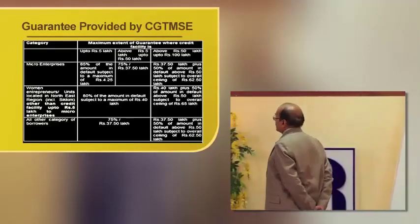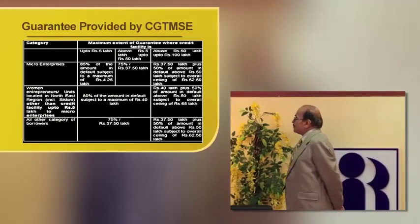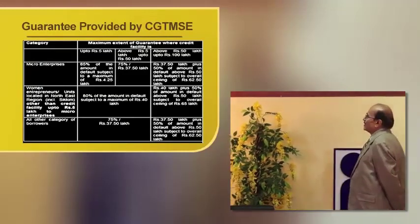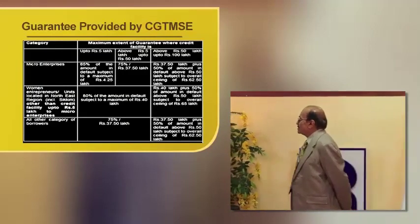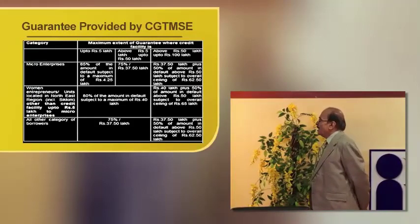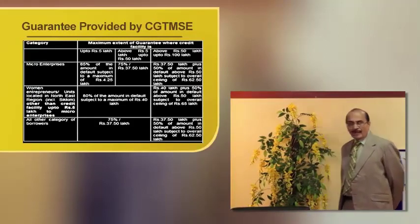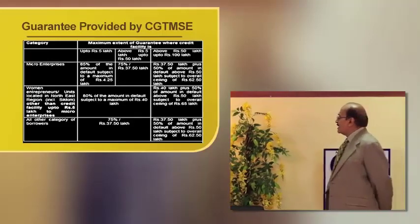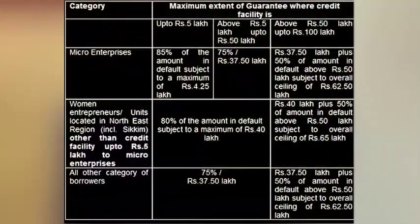The guarantee provided by CGTMSE is available according to different categories and loan amounts. The maximum guarantee permissible: for micro enterprises up to 5 lakhs, the guarantee available is 85% of the amount in default, subject to a maximum of 4.25 lakhs. So the banker is well covered — if the exposure is 5 lakhs, the guarantee trust will reimburse 4.25 lakhs to you.